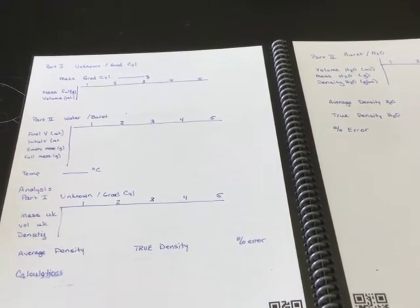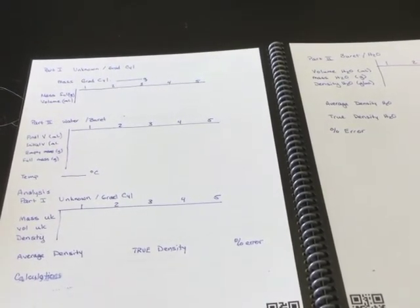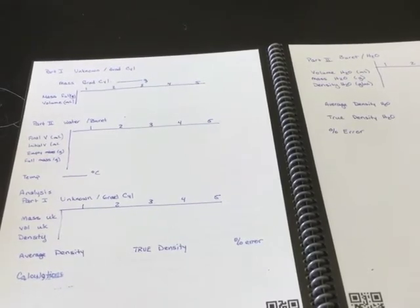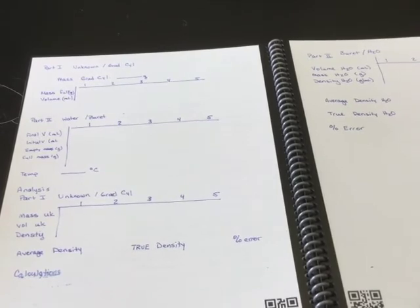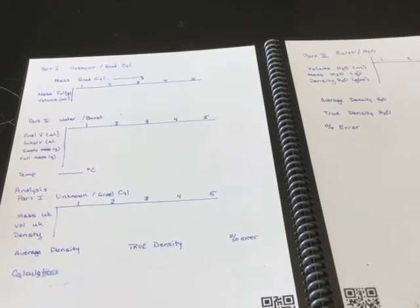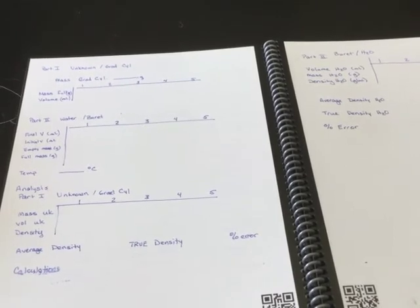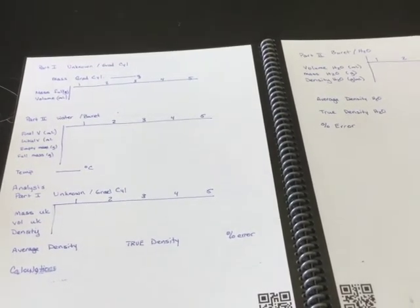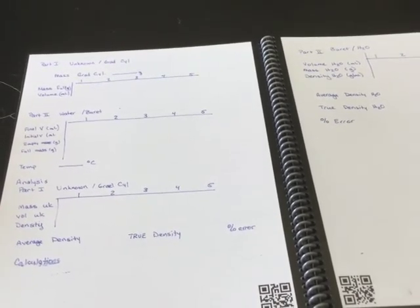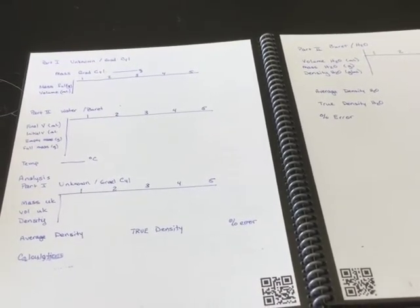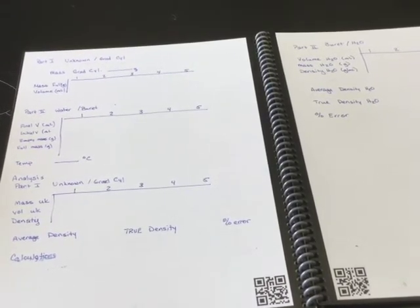For each measurement that you make, be sure to record all of the significant digits and the units. On a digital scale, such as the analytic balance, the significant figures include everyone that appears on the digital scale. For an analog scale, such as on the graduated cylinder or the burette, you can record every number that you are absolutely certain of from the line markings, and you may estimate the final digit between the line markings.